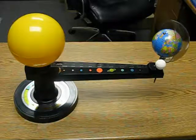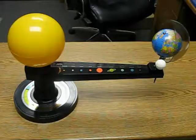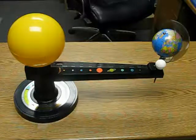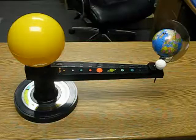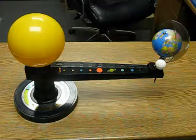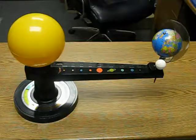Number eight, why we only see one side of the Moon. Number nine, why there are eclipses of the Sun and Moon. Number ten, why there are tides.